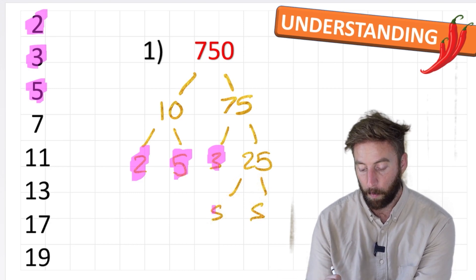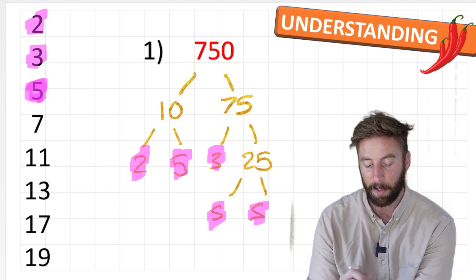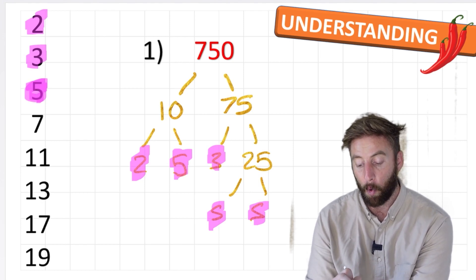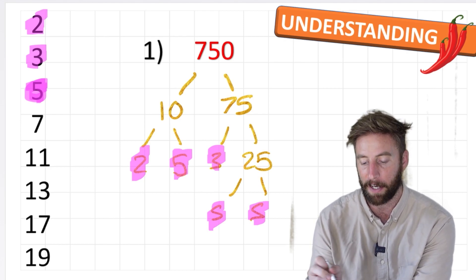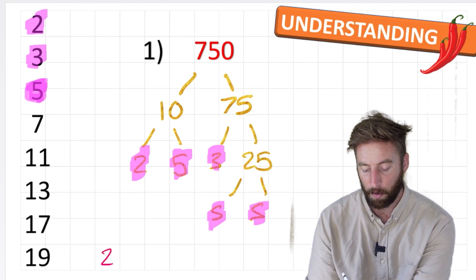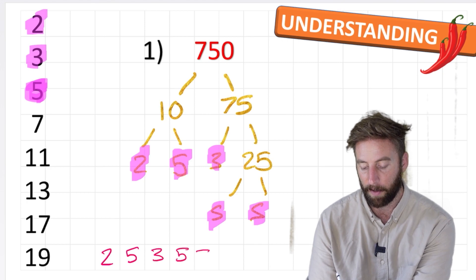And look what we've got. We've got our last prime numbers again because 5 is a prime number. So now I'm all the way down to my prime numbers. I factorize 750 into its prime factors. And the factors are 2, 5, 3, 5 and 5.